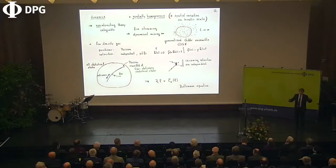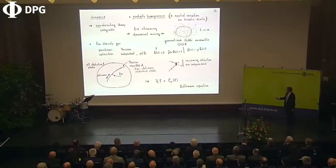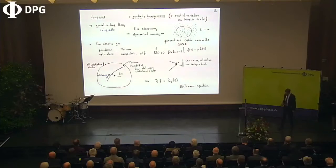We have two parameters: the density of particles, which is uniform, and independent velocities given by a probability density function h normalized to one. The Boltzmann F function is simply this product. The local state is characterized by this Boltzmann F function. It's a unique label of the stationary states under the non-interacting dynamics.